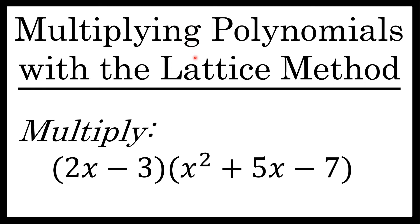In this video, I will show you how to multiply polynomials using the lattice method, which is also known as the box method. The box method can be used to multiply any two polynomials, and as an example, I'll use the box method to multiply 2x minus 3 times x squared plus 5x minus 7. Let's begin.